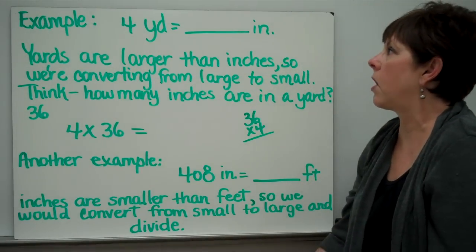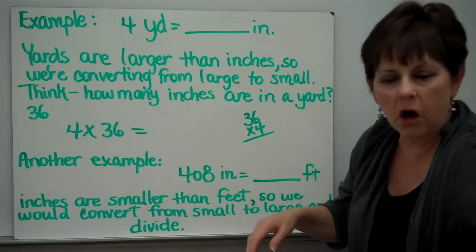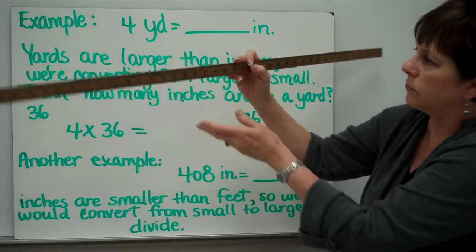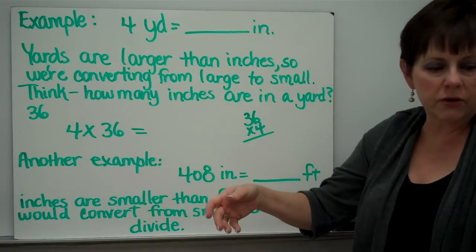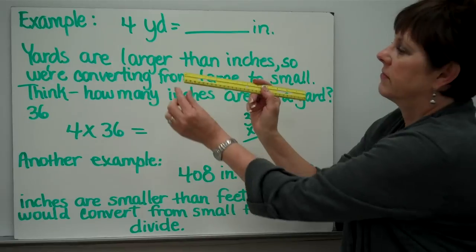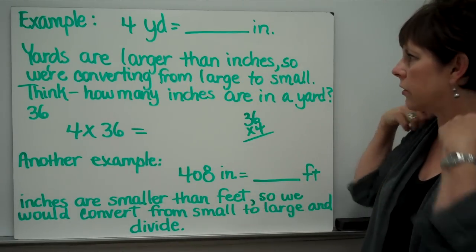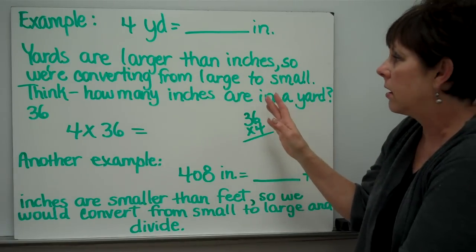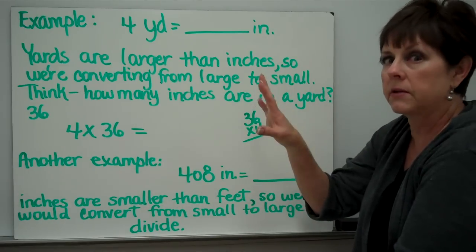Here's an example. Four yards is how many inches? Well, here's a yardstick. Yards are larger than inches. Here's an inch. So yards are obviously larger. So we would be converting from large to small, and when you're doing large to small, you would multiply.